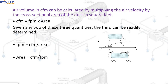CFM equals FPM × Area. Given any two of these three quantities, the third can be readily determined: FPM equals CFM divided by Area; Area equals CFM divided by FPM.